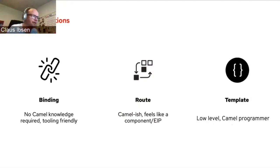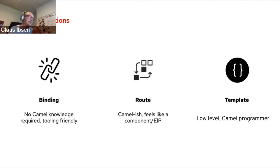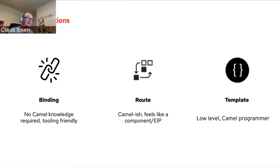There are three categories for using Kamelets — really three different audiences. The binding mode is for users that don't know anything about Camel — they just want to connect system A to system B. Then there's writing a Camel route in a single file, like I did with the Camel K init demo — you need some Camel experience for that, but with XML or YAML, no Java compiler needed. And then you can build your own Camel templates or Kamelets — that's more low-level and requires understanding Camel. So three different levels.